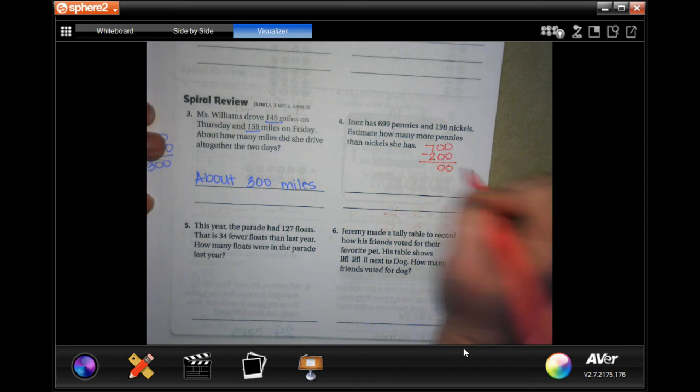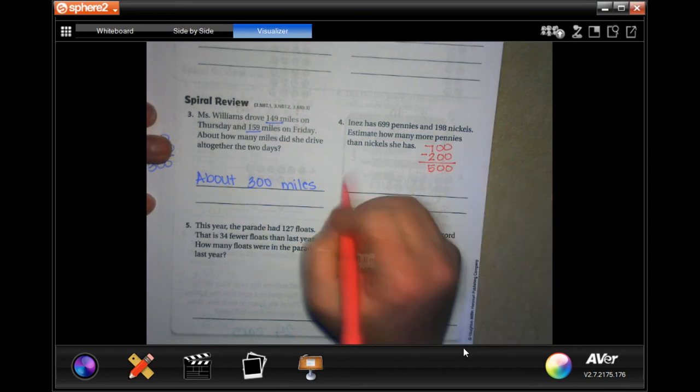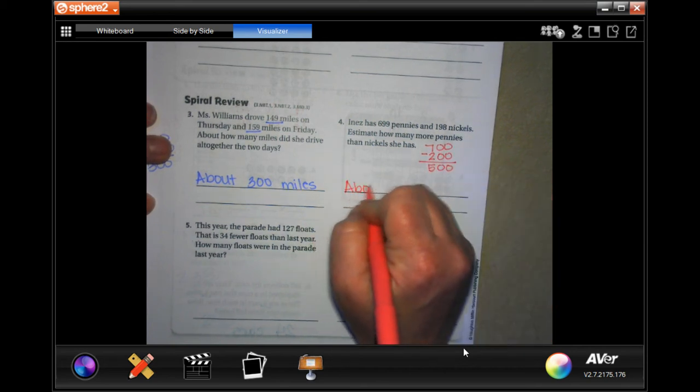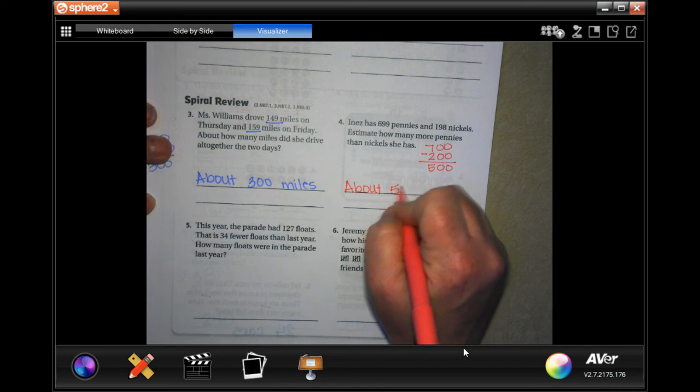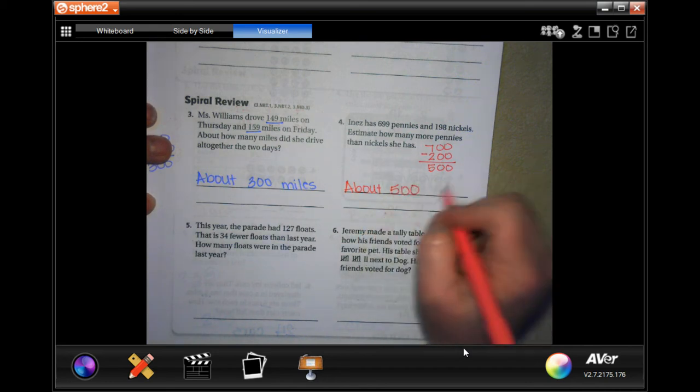So, 0 and 0. And then 7 minus 2 is 5. So, about 500 more pennies.